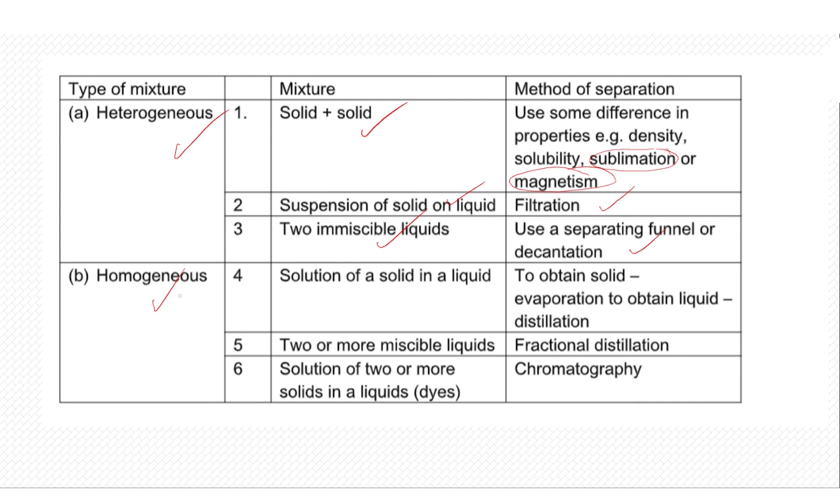And then when we go to the homogeneous, the one that forms the uniform composition or uniform layer, we have solid-liquid mixture where the solid dissolves in the liquid and we can use evaporation or crystallization. So those are the methods that we use for that. And then if you have liquid mixtures where both liquids can mix together, we use fractional distillation.